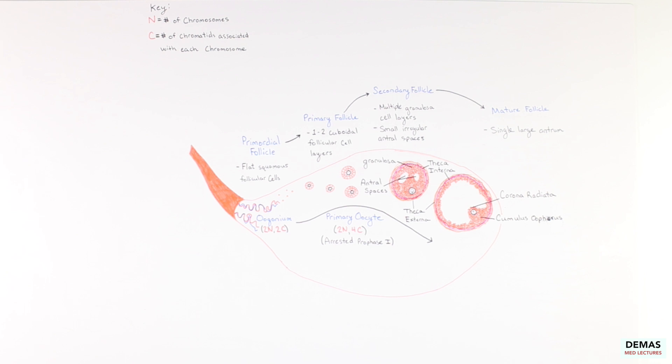At the time of birth, all the oocytes in the ovaries are primary oocytes that are arrested in this stage of development. It isn't until puberty that meiosis I resumes.